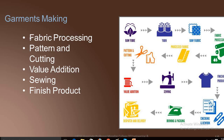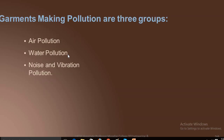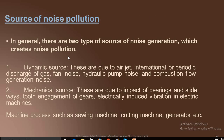These are some of the garment-making fabric processing steps: pattern and cutting, value addition, weaving, and finishing. Pollutions in garment industries are of three groups: air pollution, water pollution, and noise and vibration.